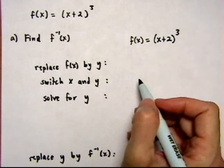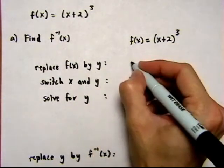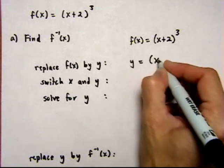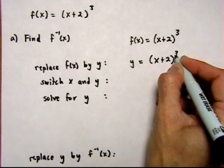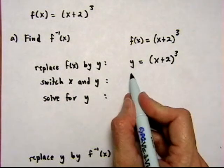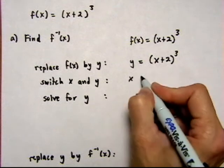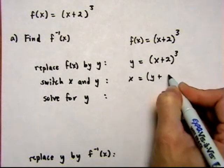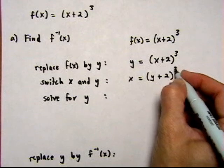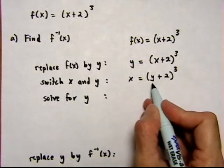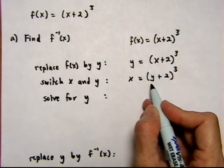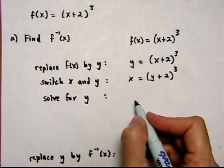The first step is to replace f(x) by y. y equals x plus 2 cubed. And then we're going to switch the x and the y. And once we do that, y is what we want to solve for because that's going to equal our inverse function. So we go ahead and solve for y.